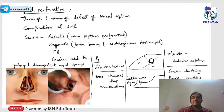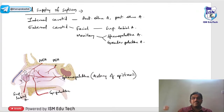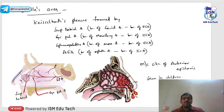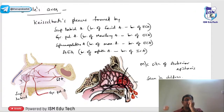Regarding blood supply of the septum: the most important area is Little's area, located in the anteroinferior part of the septum. It is formed by four arteries converging: the superior labial artery (branch of facial artery), the greater palatine artery, the sphenopalatine artery, and the anterior ethmoidal artery.